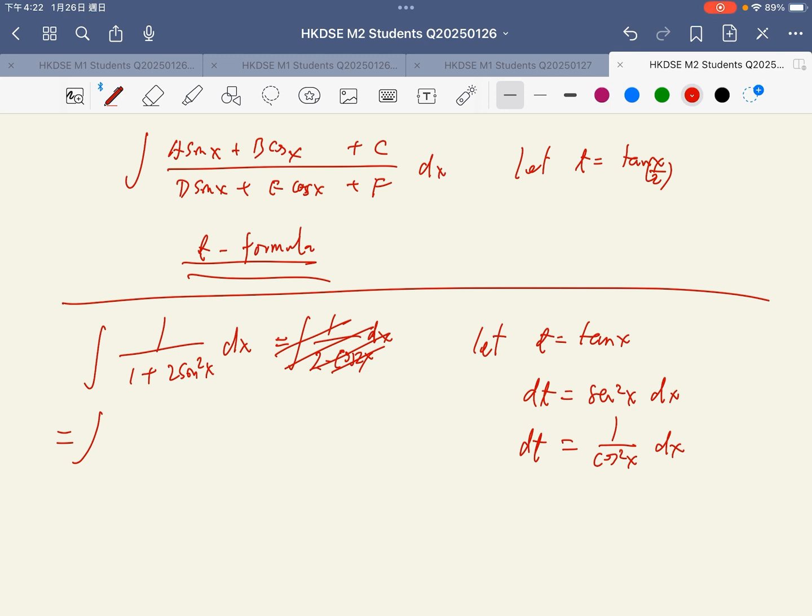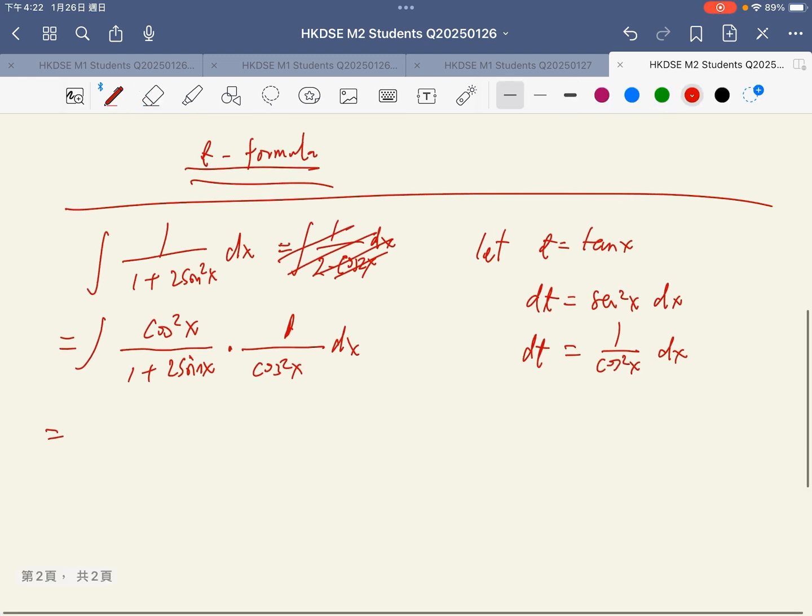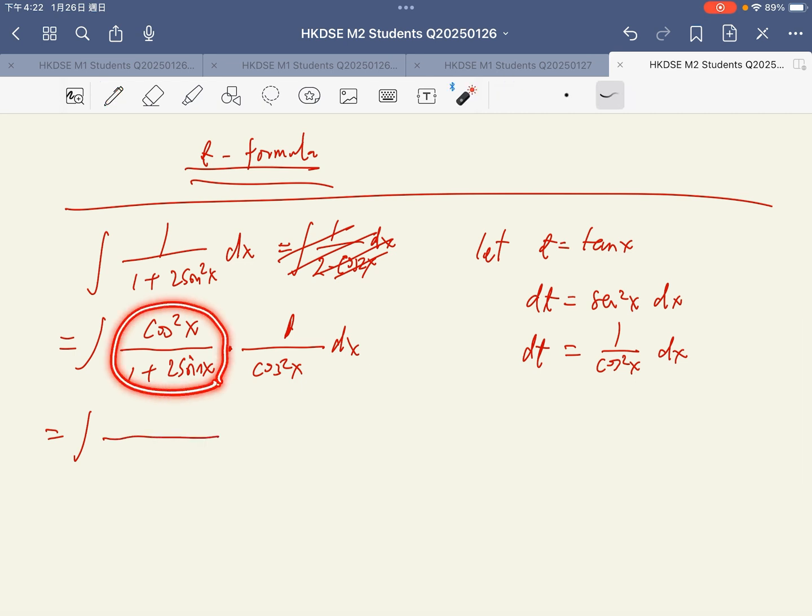I insert this one, cosine square x dx. Therefore, for the numerator, I also insert this one into the function. And then this is dt. Next time, I change this to dt.